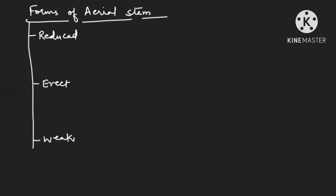In the reduced category, you can remember the example of radish, carrot, and turnip, in which the stem is highly reduced and disc-like. This is a discoid stem which is highly reduced. This is the root which has gone for modification to store food. On this reduced stem you are finding a leaf present — these leaves are known as radical leaves.